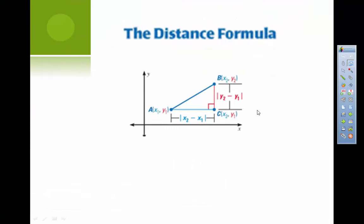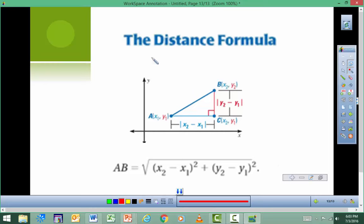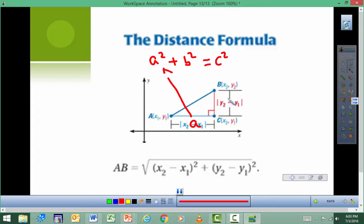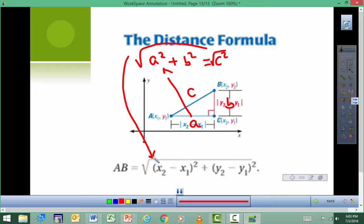Now let's look at the distance formula. This is basically the Pythagorean theorem. From Algebra 1, you know a² + b² = c² for any right triangle. In the distance formula, one leg is like A, the other is like B, and the distance is C. Taking a square root of both sides is why there's a square root in the formula. It's not terribly hard — we just plug the numbers in and simplify. Hopefully you can handle the square roots, and if not, you can use your calculator.